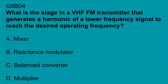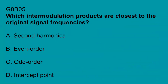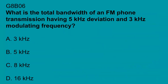G8B04: What is the stage in a VHF FM transmitter that generates a harmonic of a lower frequency signal to reach the desired operating frequency? Multiplier. G8B05: Which intermodulation products are closest to the original signal frequencies? Odd order. G8B06: What is the total bandwidth of an FM phone transmission having 5 kHz deviation and 3 kHz modulating frequency? 16 kHz.